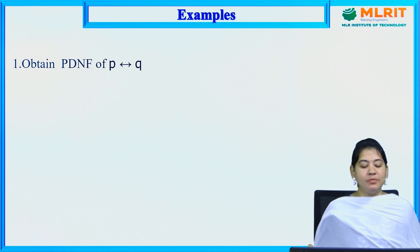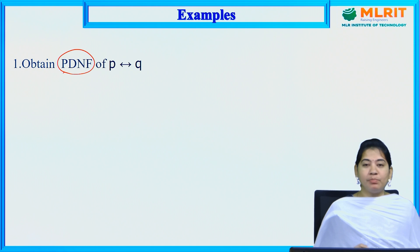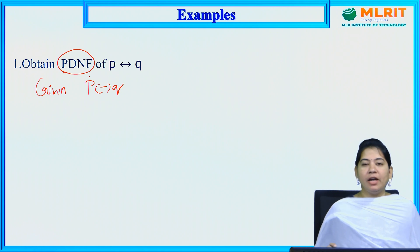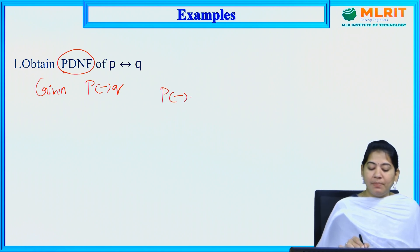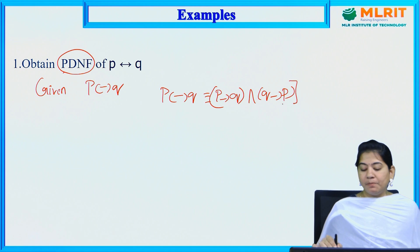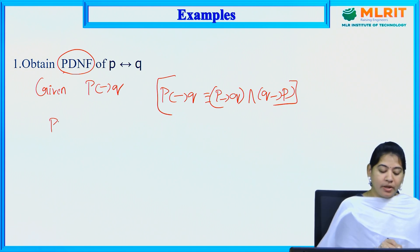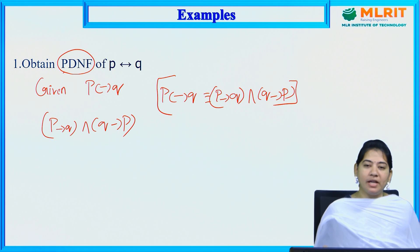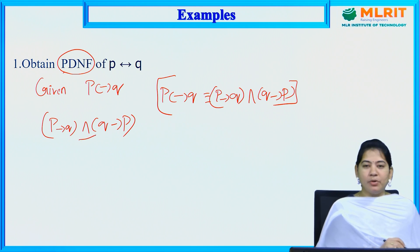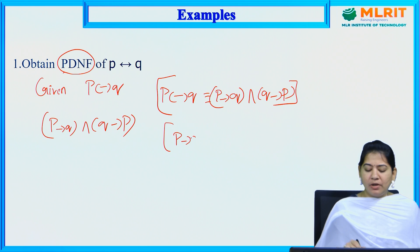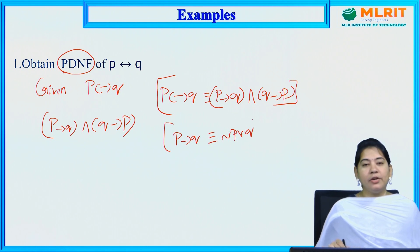Let us solve a few problems on PDNF. The first question is: find the PDNF of P ↔ Q. The standard formula is P ↔ Q ≡ (P → Q) ∧ (Q → P). Applying the formula P → Q ≡ ¬P ∨ Q, we get (¬P ∨ Q) ∧ (¬Q ∨ P).